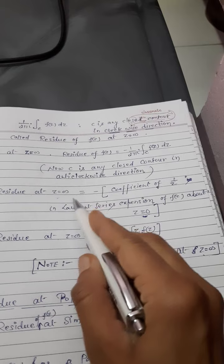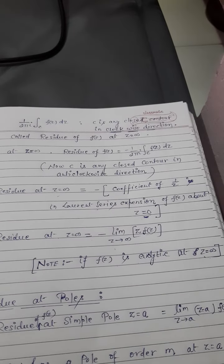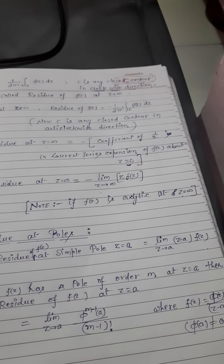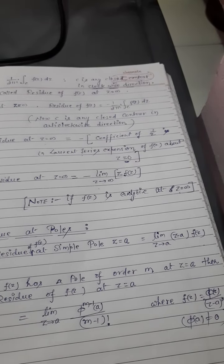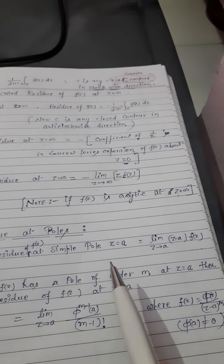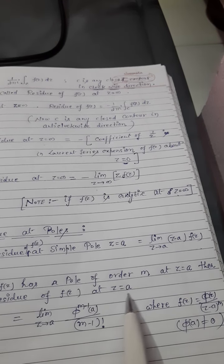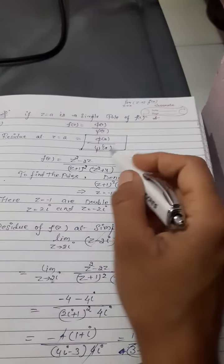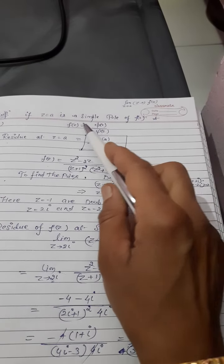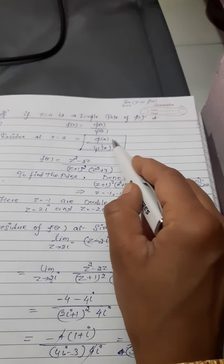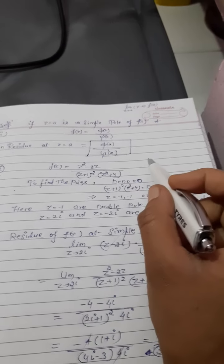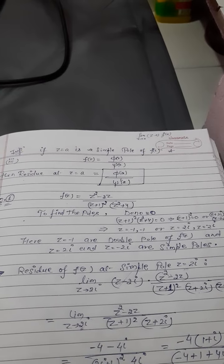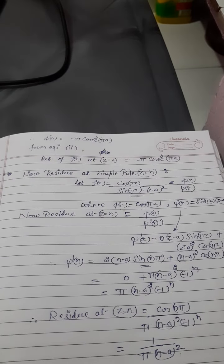तो mostly इसी को use करते हैं। यह दोनों points, example second में आप लोगों को बता दिये थे — कि simple point दिया हुआ हो तो उसके according किस तरह से residue find out करेंगे। यह point भी discuss हो गया कि function is in this form, then residue equal to φ(a) upon ψ'(a). So, z equal to infinite point पर residue find out करेंगे।